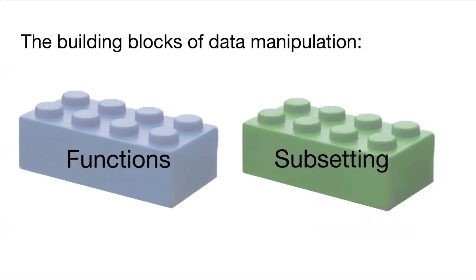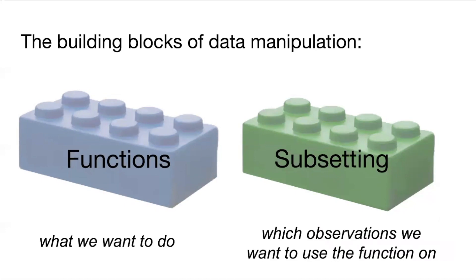We think of data manipulation as consisting of two building blocks. On one hand we have functions, and on the other hand we have subsetting. Functions are essentially what we want to do, and subsetting is which observations we want to use the function on. When combined, functions and subsetting let us manipulate the data to answer research questions.